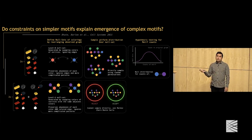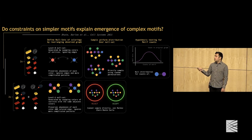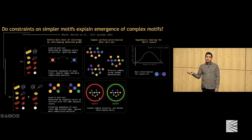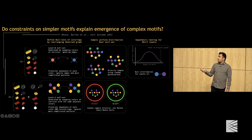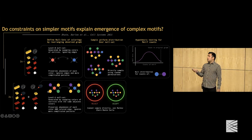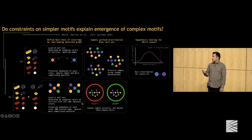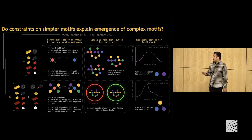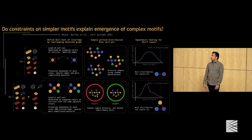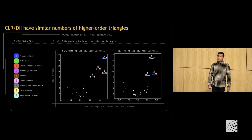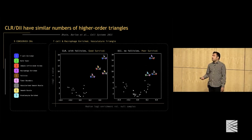You can't sample directly with this constraint, so we used an MCMC technique. Once you have this distribution generated by MCMC, you do hypothesis testing, now testing the count of each triangle. Our finding was that both CLR and DII patients had a similar number of triangles that were significant after constraining the number of edges. This means it's not just a jumbled mess — the DII patients also have structured assemblies.